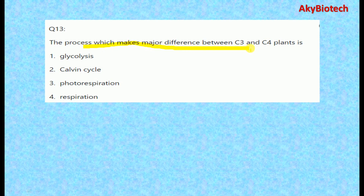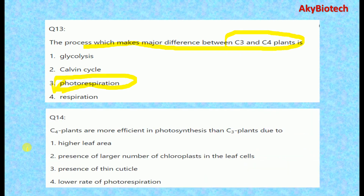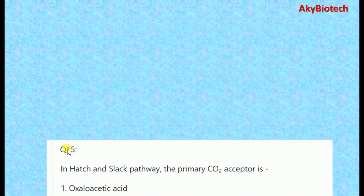Question thirteen: the process which makes the major difference between C3 and C4 plants is photorespiration — this marks the major difference between the two cycles. Question fourteen: C4 plants are more efficient in photosynthesis than C3 plants due to the presence of a larger number of chloroplasts in the leaf cells, so the correct option is number two.